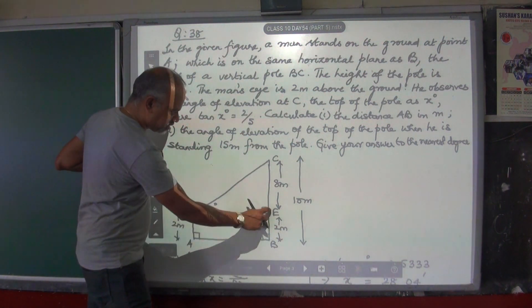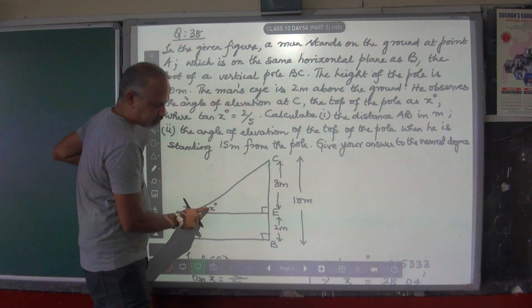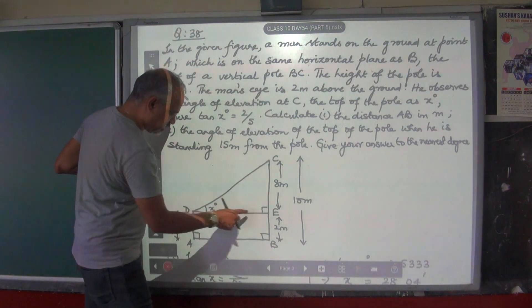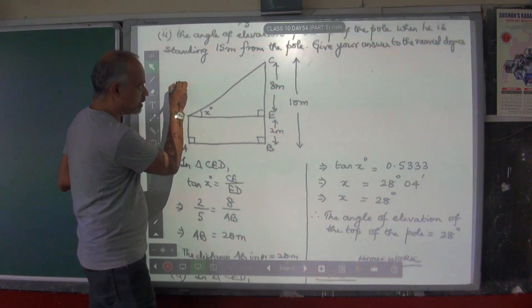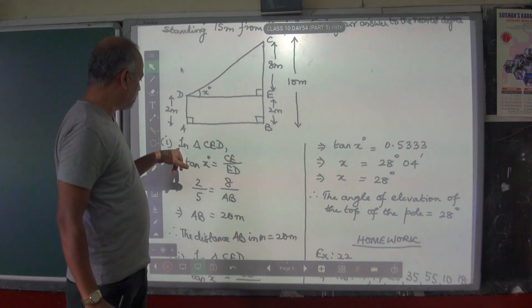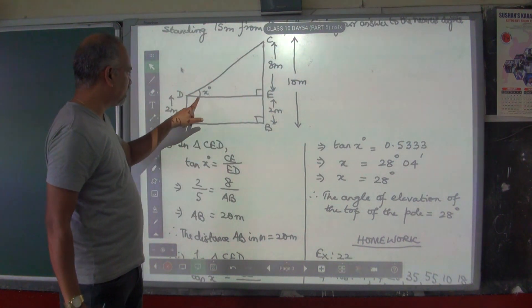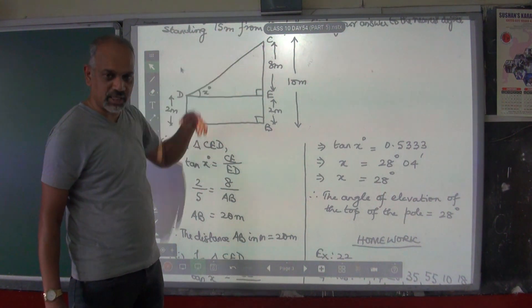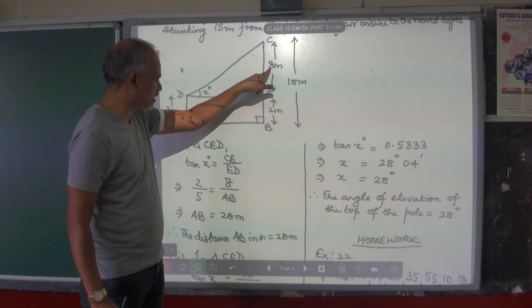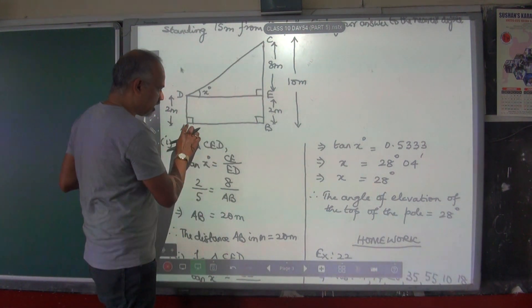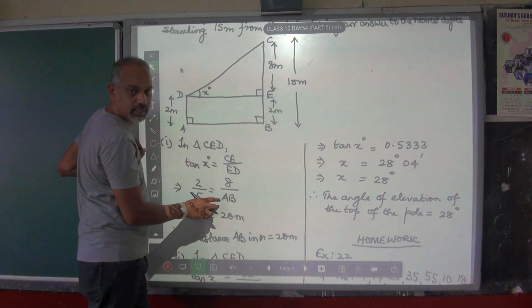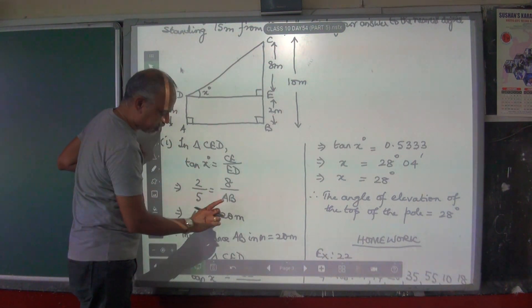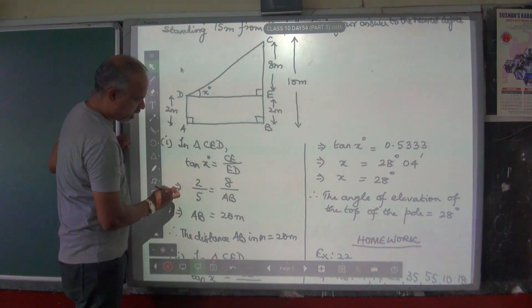We will use triangle CED, which is the right angle triangle with the X degree mark in it. The perpendicular here is CE and you don't know the base — that is what you have to find. In triangle CED, tan of X is equal to perpendicular CE by base ED. Tan X's value was given as 2 by 5, which equals CE's value of 8 divided by ED, which you can also write as AB. Cross multiply this: AB is equal to 20 meters. That's the first answer — distance AB is 20 meters.